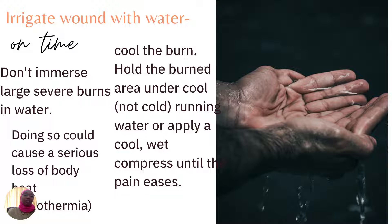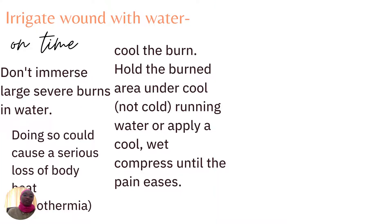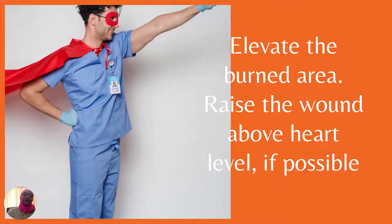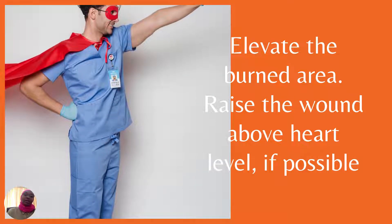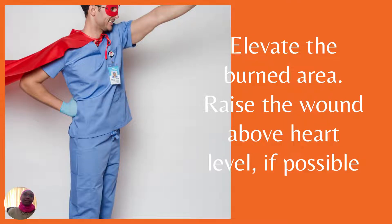Don't immerse large, severe burns in water, because that could lead to a serious loss of body temperature — the person may become hypothermic. So cool the burn: hold the burnt area in cool running water, or apply a cool wet compress until the pain eases. Elevate the burnt area — for example, if it's the limb, and you have some cotton bandage nearby, you can improvise by making a sling to elevate that limb. Raise the limb above the level of the heart if possible.